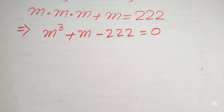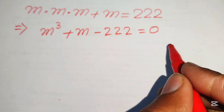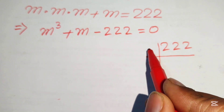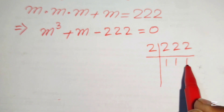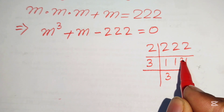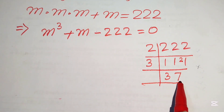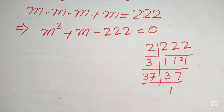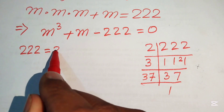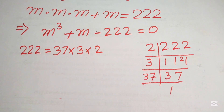Next, we focus on 222 and find its prime factors. We divide by 2, then by 3, then by 37, giving us 222 = 2 × 3 × 37.